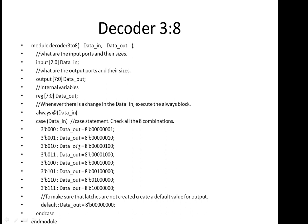Similarly, when data_in is 3'b001, data_out gets 8'b00000010. For data_in equals 3'b010, data_out is 8'b00000100. Then 3'b011 gives 8'b00001000, 3'b100 gives 8'b00010000, 3'b101 gives 8'b00100000, and so on for all combinations up to 3'b111.